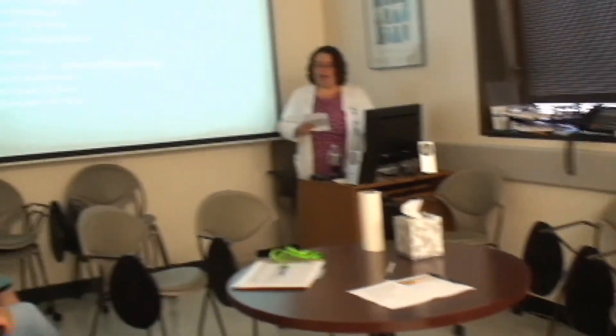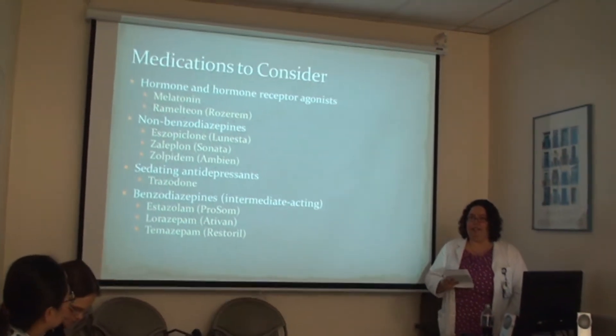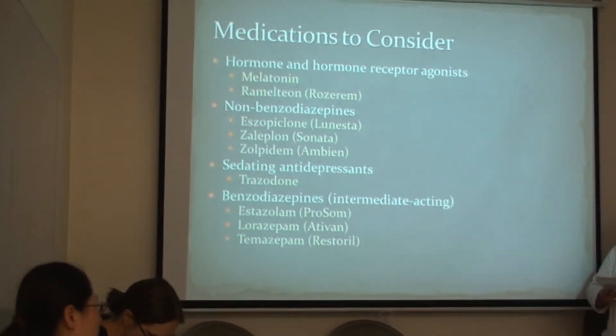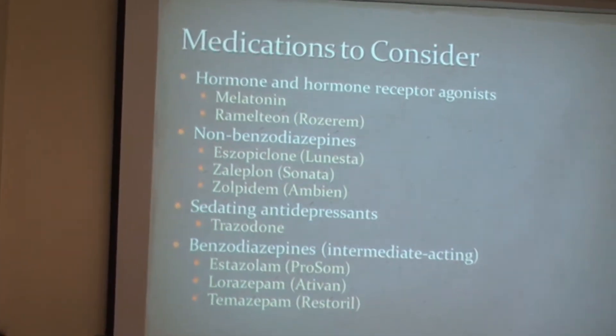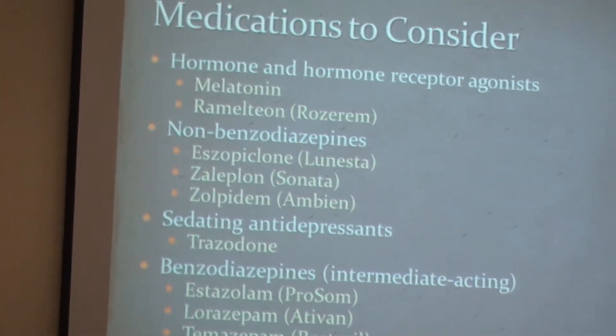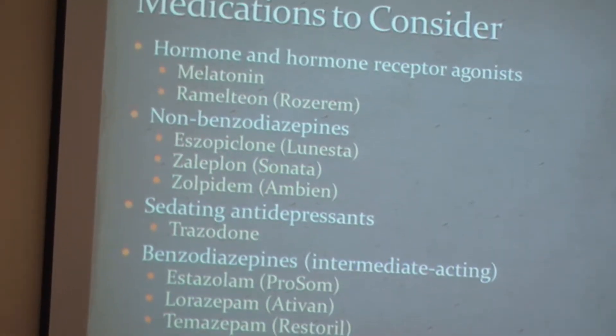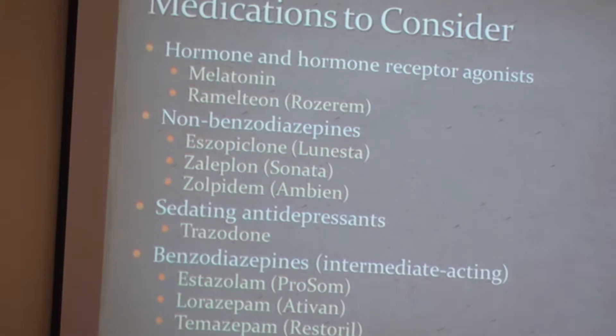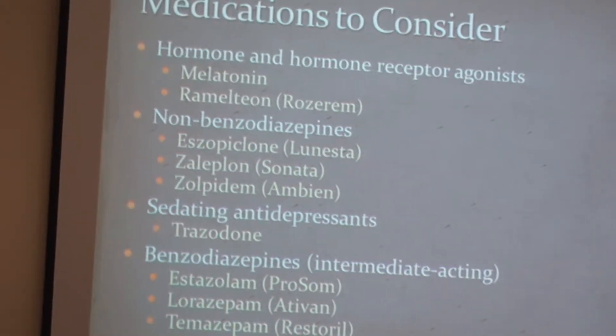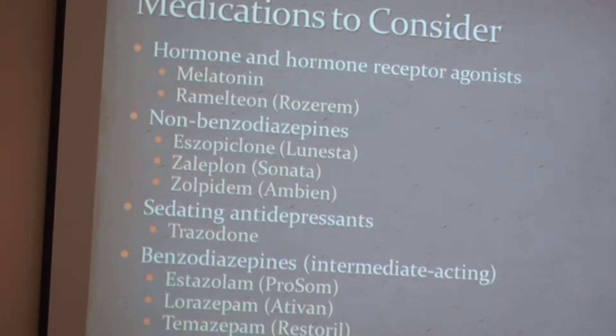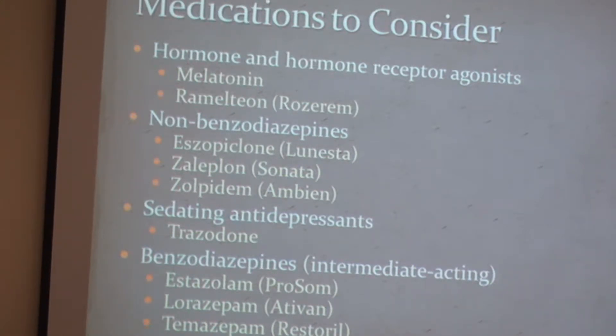Sleep clinics actually use melatonin as a first-line medication, but you have to take it routinely. Melatonin effects are seen within four to six weeks — that's a lot of time. Ramelteon is a melatonin receptor agonist — a synthesized drug with higher affinity for that receptor. It has been shown to improve some sleep parameters, but overall doesn't appear to be dramatically effective, similar to melatonin. Studies show it helps more with onset of sleep than maintenance.